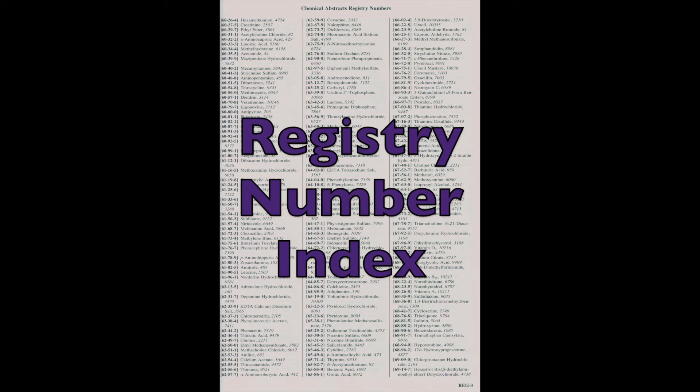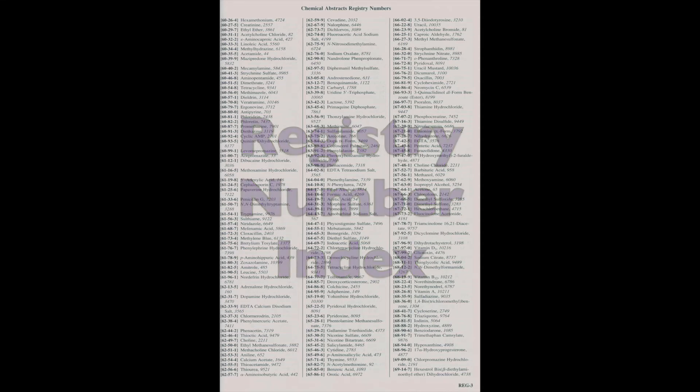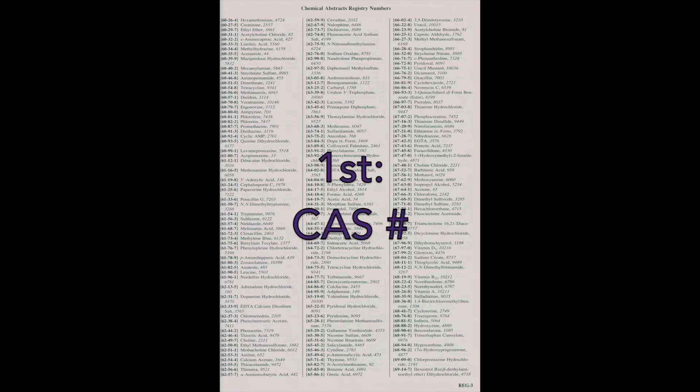Merck entries are organized alphabetically by main entry name. If you cannot find your compound as a main entry, I strongly recommend using the CAS registry number index at the end of the Merck to find your compound. You can see that the registry number index provides three pieces of data: the CAS registry number, the main entry name, and compound entry number. Compounds are numbered consecutively within the Merck, so you will need this entry number to find your compound.